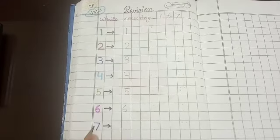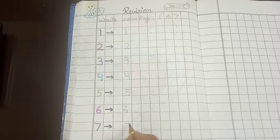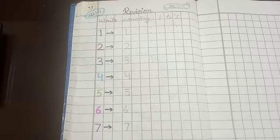And which number is this? 7. Sleeping line. Then slanting line. Ban gaya number 7.